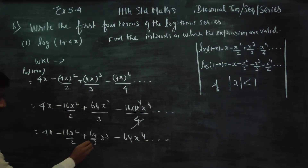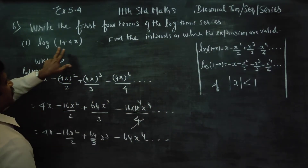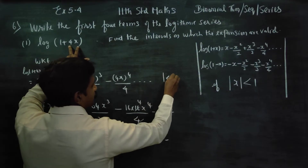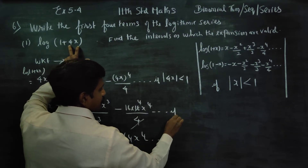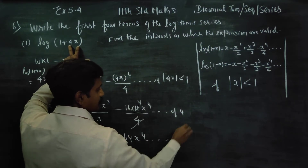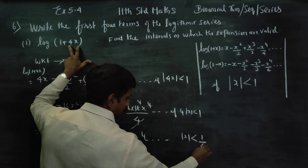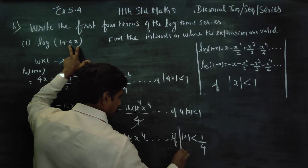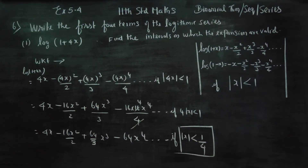We have expanded four terms. Now the expansion is valid if the modulus of 4x is less than 1. Since 4 is positive, modulus of x is less than 1 divided by 4. So the condition is: modulus of x is less than 1 by 4. This is the required condition for the expansion.